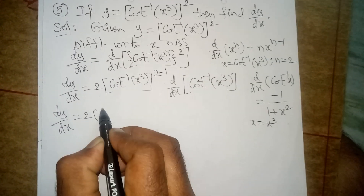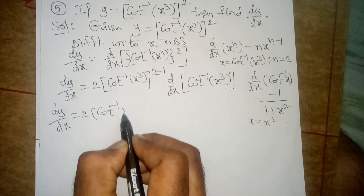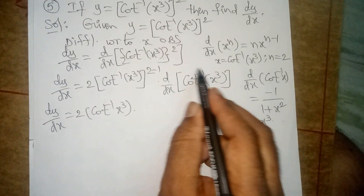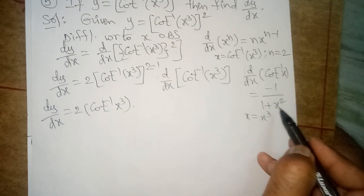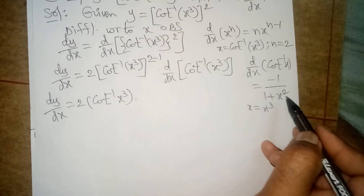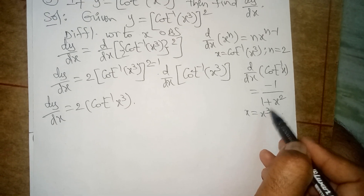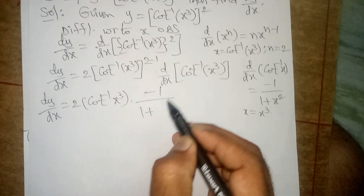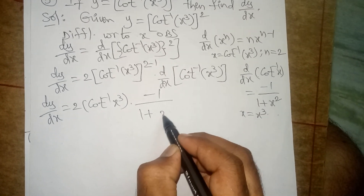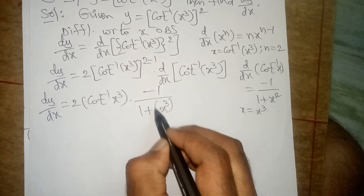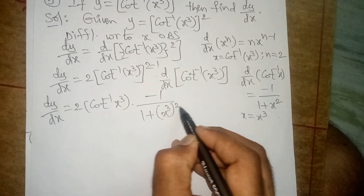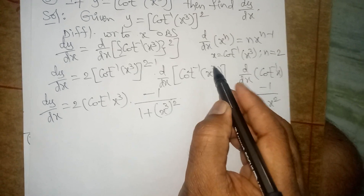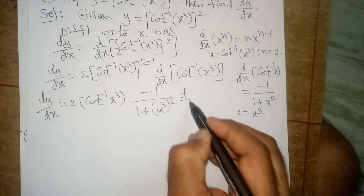Here x is x cube, so substituting we get dy by dx is equal to 2 into cot inverse x cube whole power 2 minus 1, which is 1, into d by dx of cot inverse x. Using the formula minus 1 by 1 plus x square, and x value is x cube, we substitute and get minus 1 by 1 plus x cube whole square.